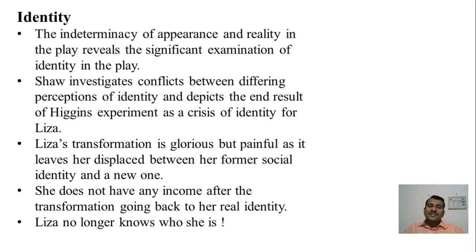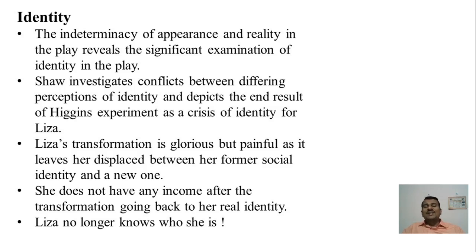The next theme is identity. The indeterminacy of appearance and reality in the play reveals a significant examination of identity. You cannot strongly bifurcate identity because the appearance and reality theme creates ambiguity, and there is an identity crisis after Lisa's transformation. Shaw investigates conflicts between differing perceptions of identity and depicts the end result of Higgins's experiment as a crisis of identity for Lisa. His attempt is successful from his point of view, but Lisa loses her identity. Her transformation is glorious and yet painful, as it creates a displacement between her former social identity and her new transformed identity.